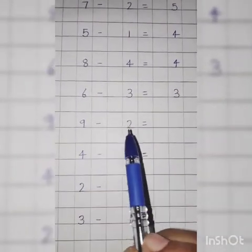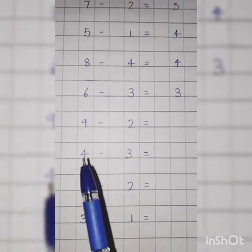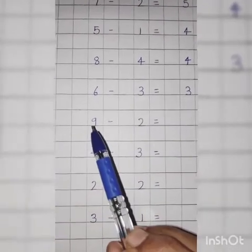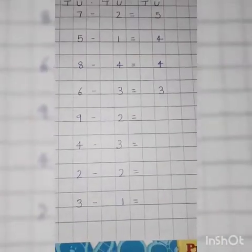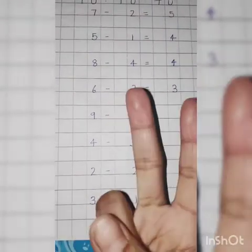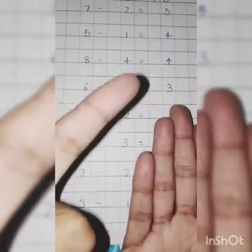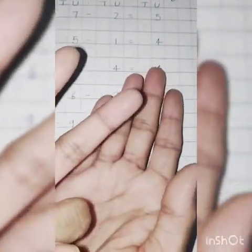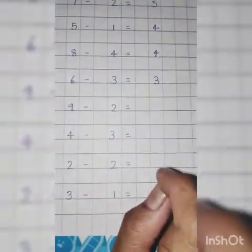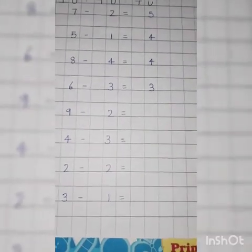9 minus 2. Throw 2. Count till 9. What comes after 2? 3, 4, 5, 6, 7, 8, 9. How many fingers are left? This is 5 fingers, and here 2 more: 5, 6, 7. So, answer is 7. Write down 7.